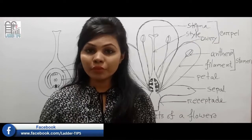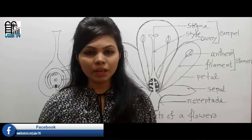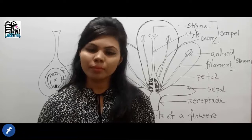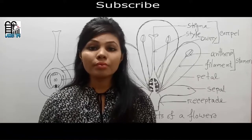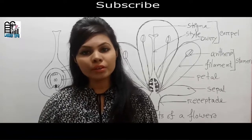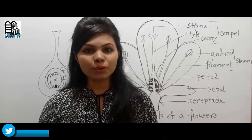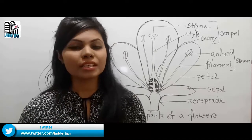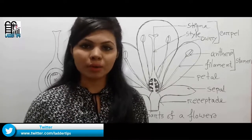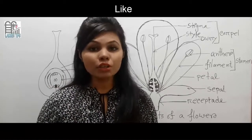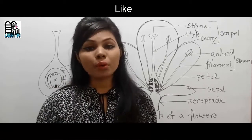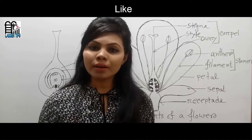Today I'll show the different parts of a flower, because a flowering plant produces its offspring through sexual reproduction. A flower is an important reproductive organ of a plant, and to understand the process of fertilization,